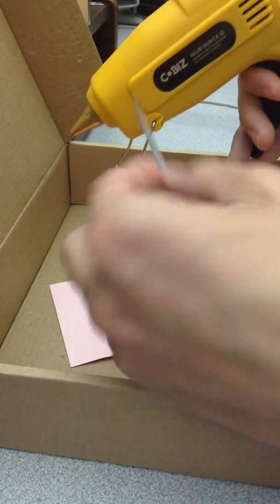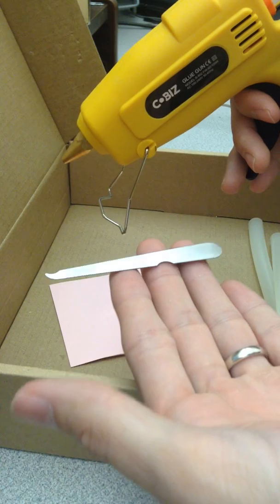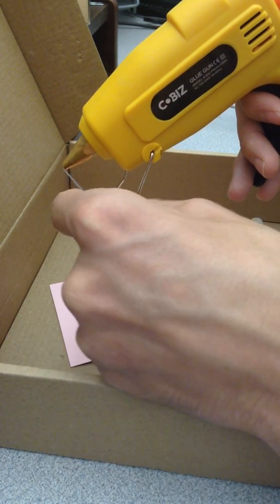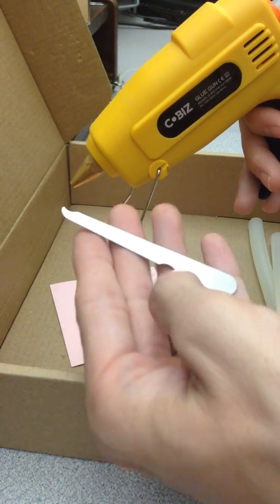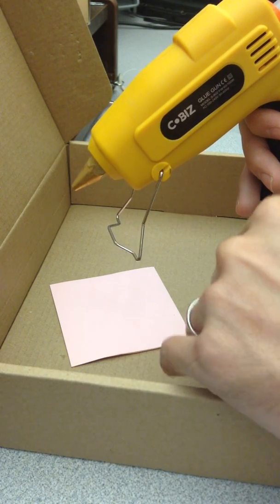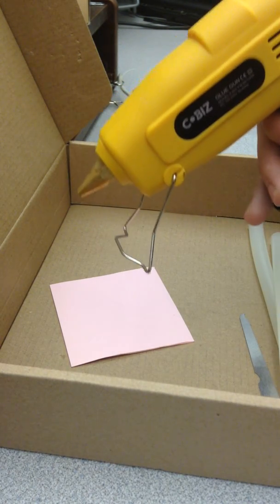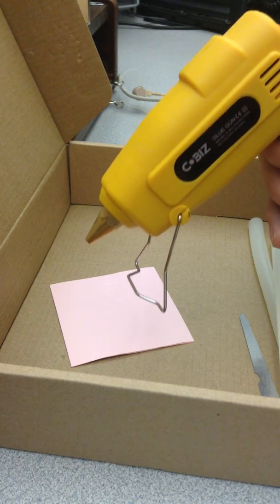It also came with this nail file, and I'm not quite sure what that's for. Maybe it's for cleaning this tip off when it gets dirty. The instructions, as far as I could tell, didn't really say what that's for.